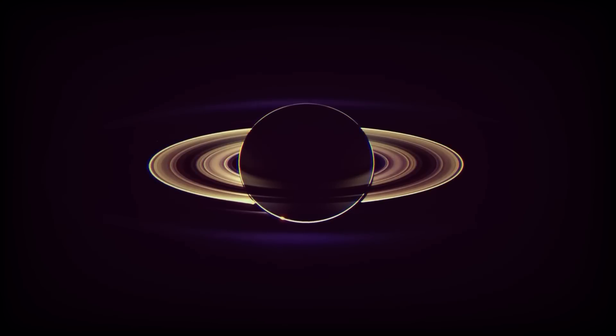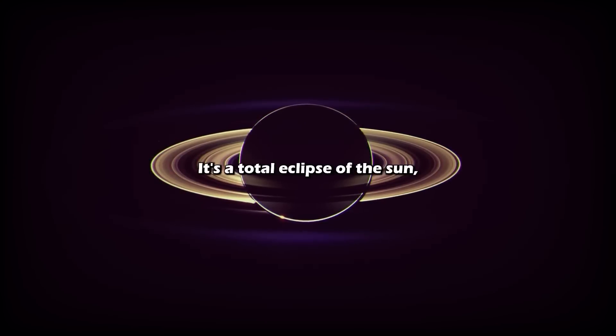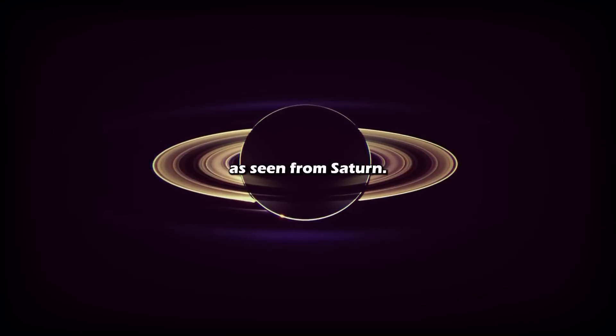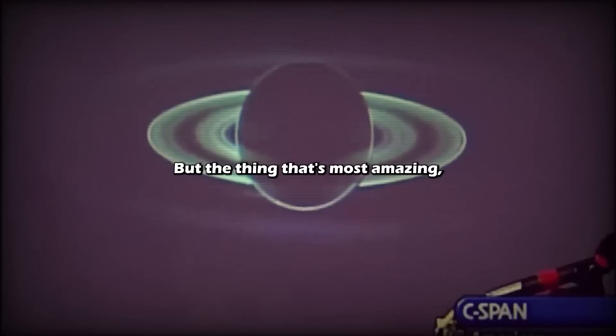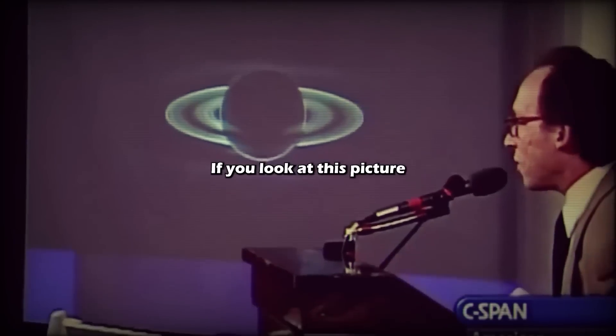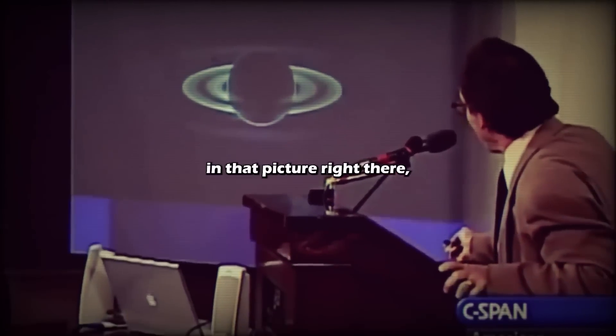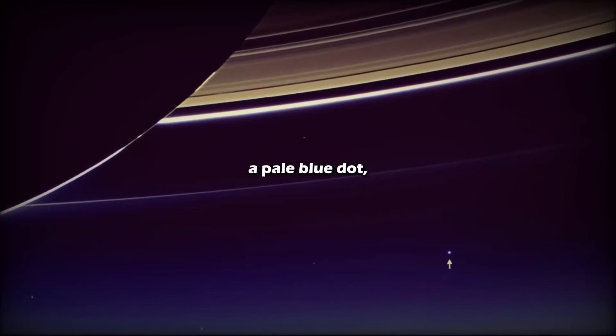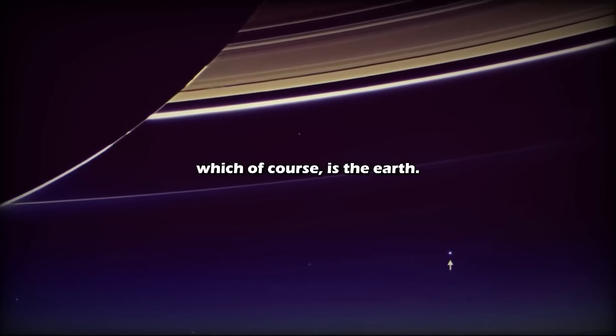This is a photograph from Cassini of Saturn. It's a total eclipse of the sun, a scene from Saturn. But the thing that's most amazing, and this projector doesn't have the resolution to see it - if you look at this picture, in that picture right there, you'll see a little dot, a pale blue dot, which of course is the Earth.